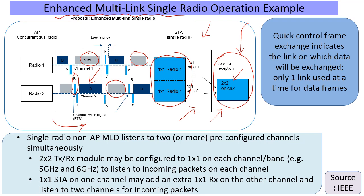Then very quickly the client has to go back to listening on both links. It now gets an RTS on the other link and has to get ready for receiving the full-fledged data on that particular link, and so on. So the EMLSR mode for a client helps you leverage the multi-link benefits in a certain way without jacking up the radio complexity too much — that is the intent of EMLSR.